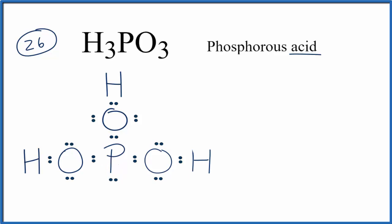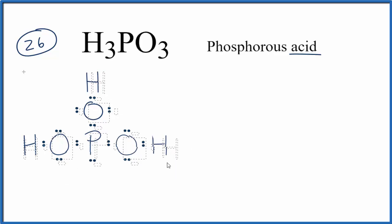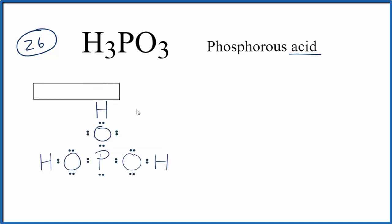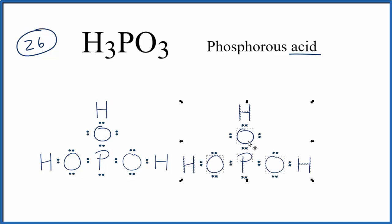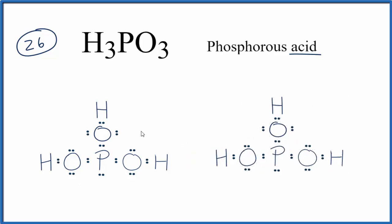So I'll copy this Lewis structure that we just came up with and put it right here, and then we're going to change it a little bit. In this case we have our hydrogen right here attached to the phosphorus.